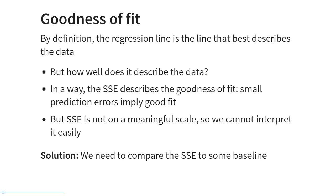So a question that may arise is: how well does this line actually describe the data in objective terms? In a way, we could say that the sum of squared errors describes the goodness of fit. If the sum of squared prediction errors is small, that implies that our regression line describes the data well. But the problem is that the sum of squared errors is not on any meaningful scale, so we can't readily interpret what a specific value means.